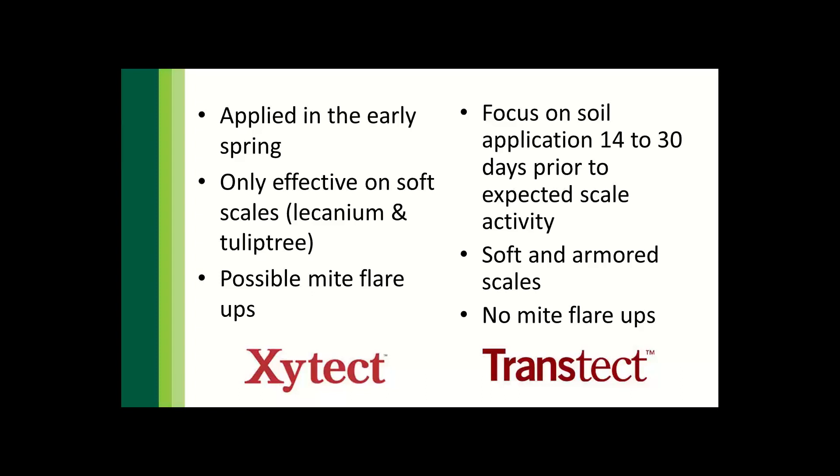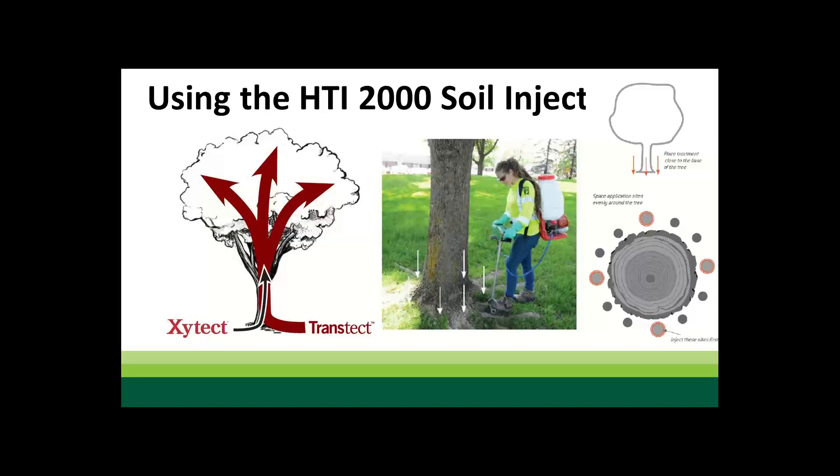If we're going to do a soil injection, we can do a soil drench — appropriate for smaller ornamental plants — or a soil injection for tree forms. Patrick will demonstrate here the soil injection with the HTI 2000. You're targeting right at the base of the target plant — we don't want to be doing these applications out into the drip line. We want to target that immediate root flare to make sure all the insecticide goes into that targeted tree.